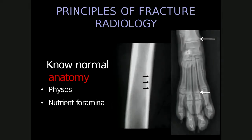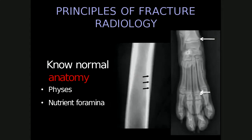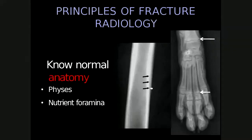To assess fractures, one needs to know normal anatomy. Physes may appear as fractures to an untrained eye — for example, the radiolucent physis of the distal radius, distal ulna, and distal metacarpal bones. The physes at the proximal metacarpal bones are closed at birth. Nutrient foramina occur in predictable locations and orientations in long bones; a radiolucent line extending from distal to proximal can mimic a fracture, but radiographing the opposite limb will confirm bilateral symmetry.